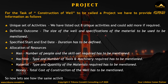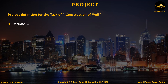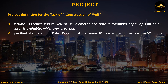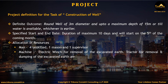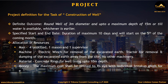So now let's see how the same activities have to be listed to be considered as a project. Project definition for the task of construction of well. Definite outcome: round well of three meter diameter and up to a maximum depth of 15 meter or till water is available, whichever is earlier. Specified start and end date: duration of maximum 10 days, starting on the 5th of the coming month. Allocation of resources — Man: unskilled labor, one mason and one supervisor. Machine: electric winch for removal of excavated earth; tractor for removal and dumping of excavated earth away from site; no other machinery. Material: concrete rings for well lining up to 10 meter depth. Money: the maximum cost shall be limited to a certain amount with individual breakup given for each resource and activity.